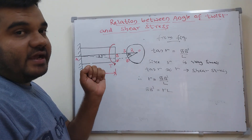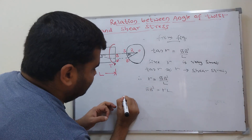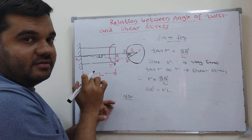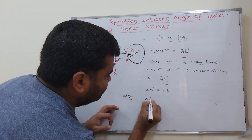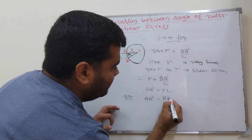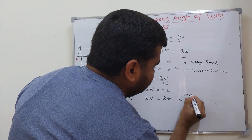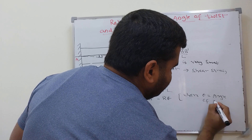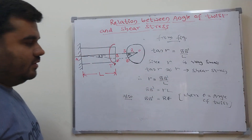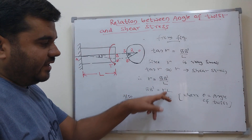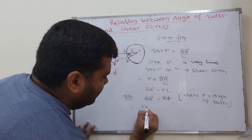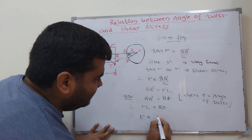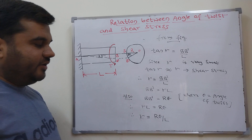Now from the end view, in terms of theta (angle of twist): BB' = R × θ. Equating the two expressions for BB' from the front view and the end view: γ × L = R × θ. Therefore, γ = Rθ/L.